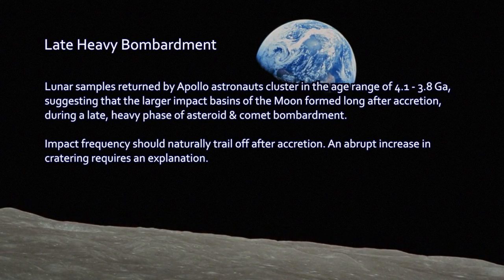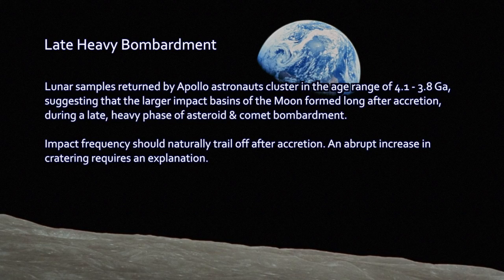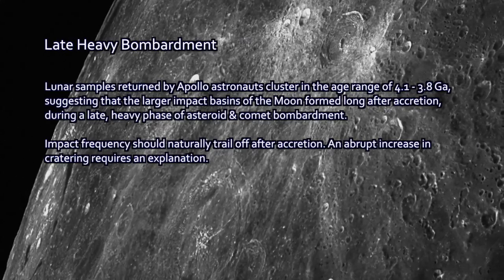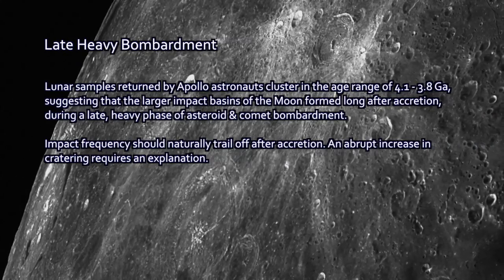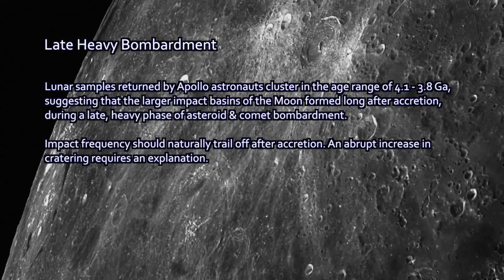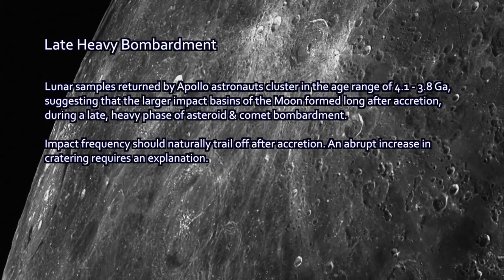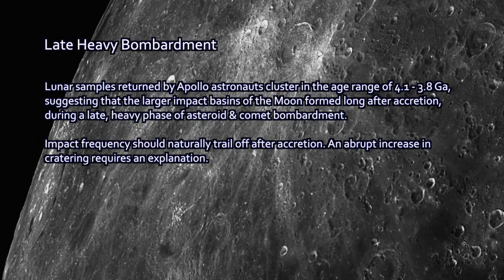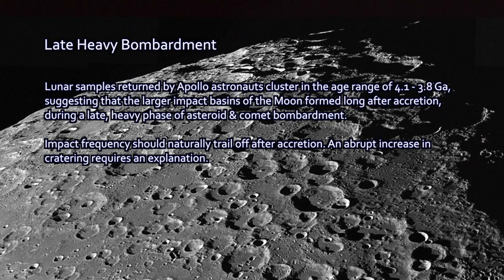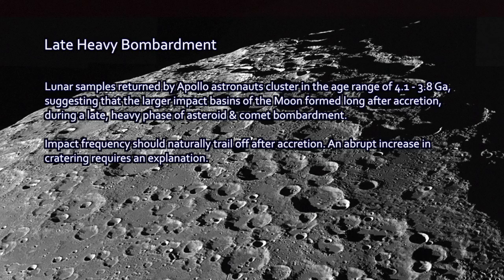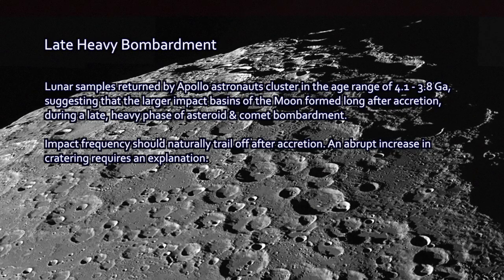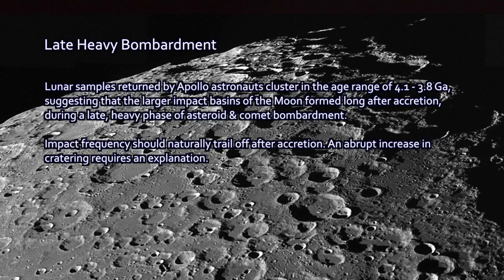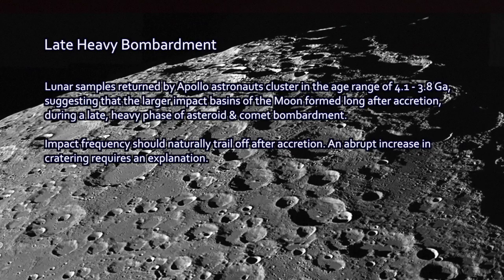Lunar samples returned by Apollo astronauts, some of them are the oldest rocks that indicate the age of the Moon around 4.4 billion years. But there's a number of them that cluster around an age range of around 4.1 to 3.8 billion years. Meaning that these are rocks from impacts, from igneous processes, that occurred all in this sort of narrow span of time. And the craters appear to be that old. So why so long after a collision, collisions should have trailed off after accretion? Did impacts suddenly loom back up again as a major issue? That's the question.